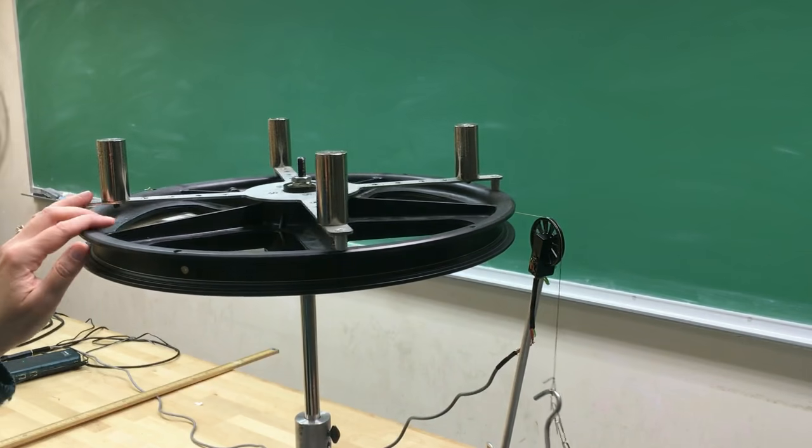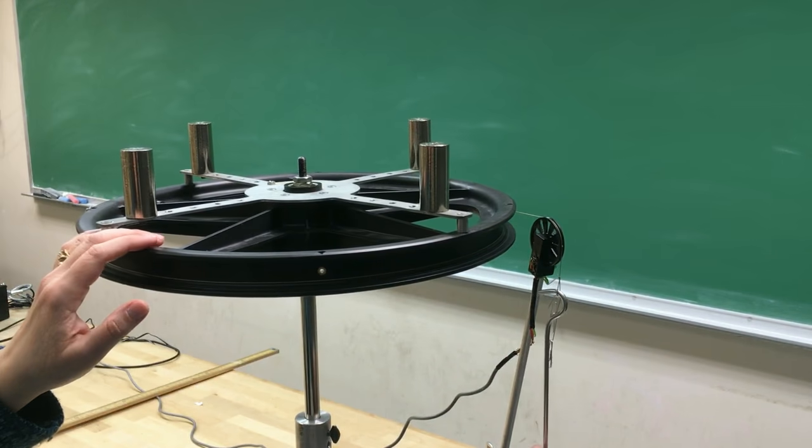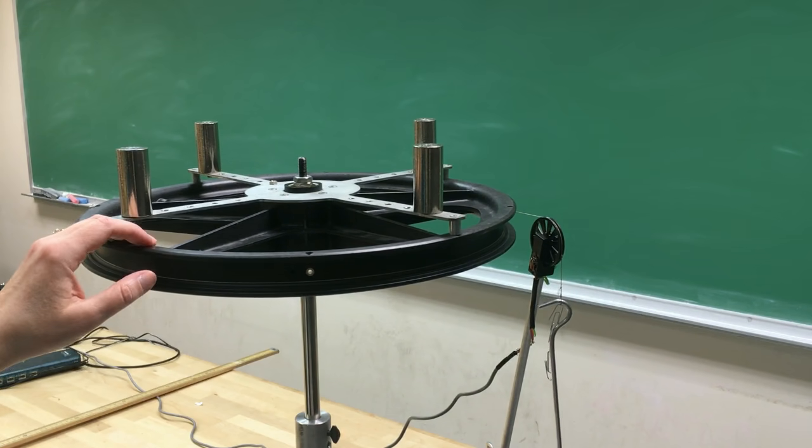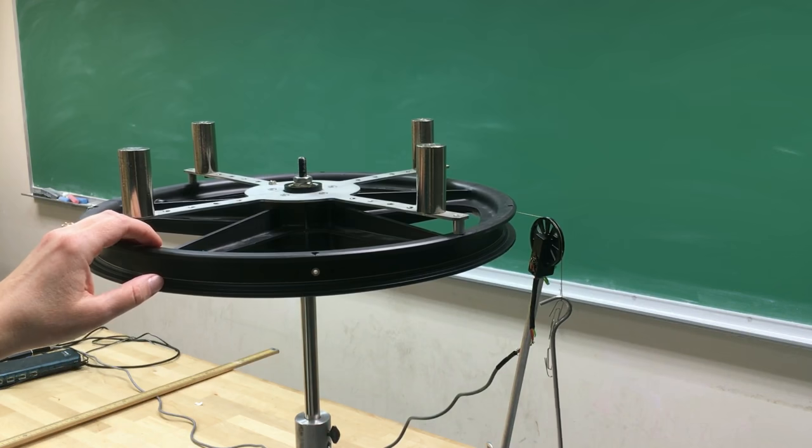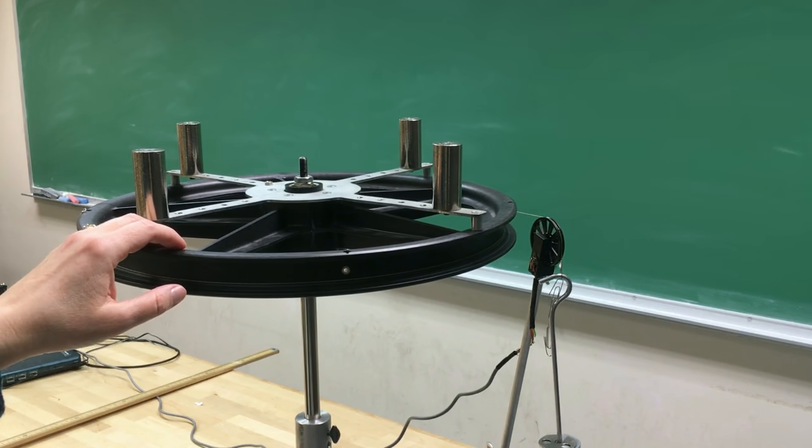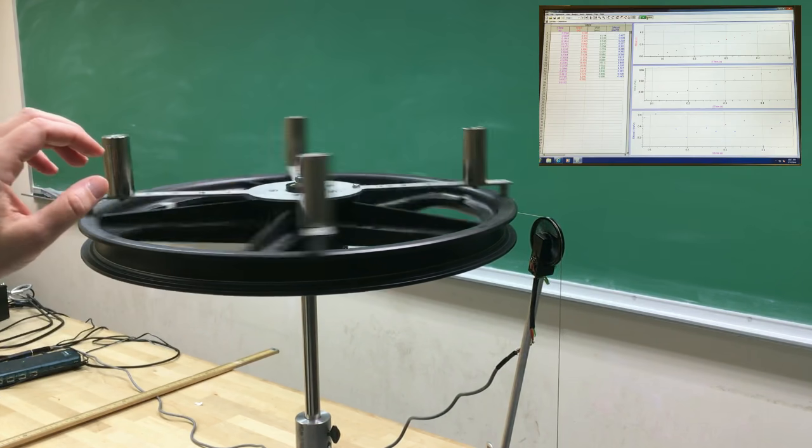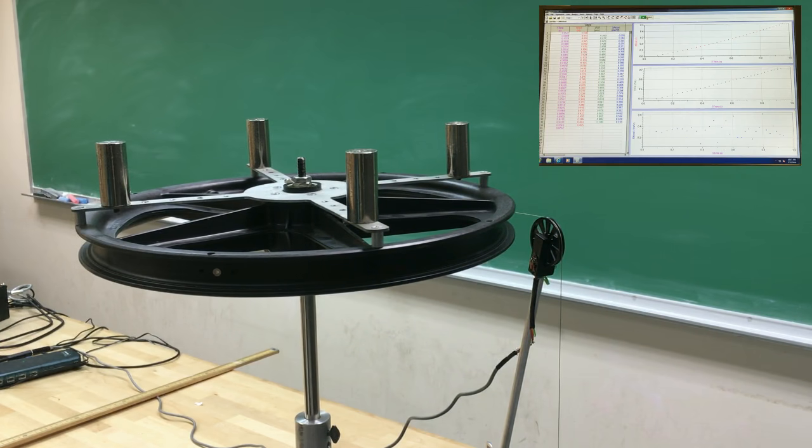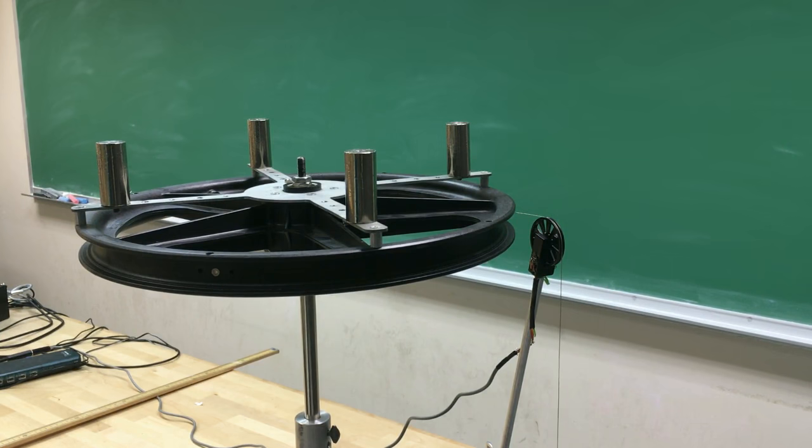Hang the mass hanger here and make sure it doesn't wobble as it's falling down. Get ready to record data with Logger Pro. Let this go, record the velocity, and then stop the wheel. Stop the recording before the mass hanger hits the ground.